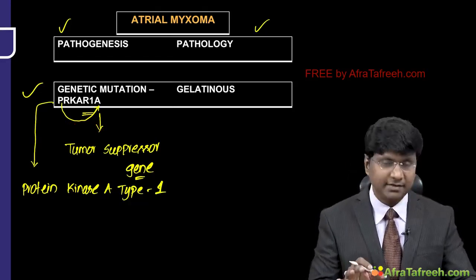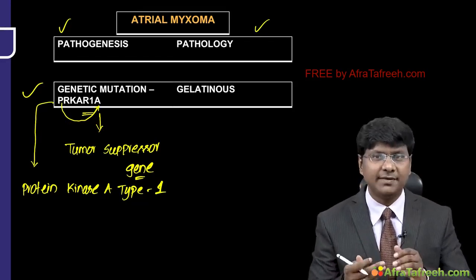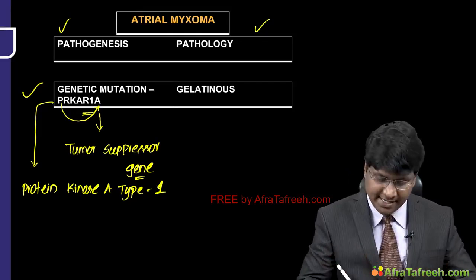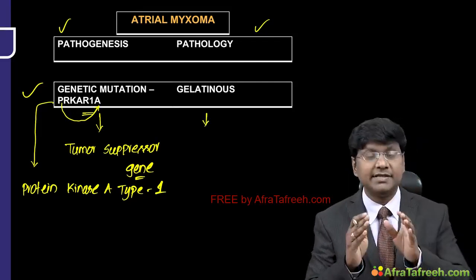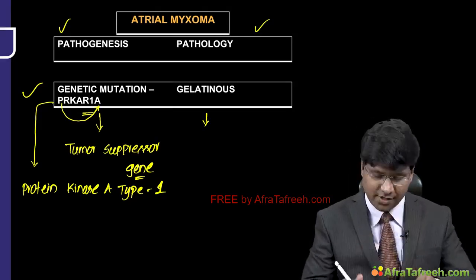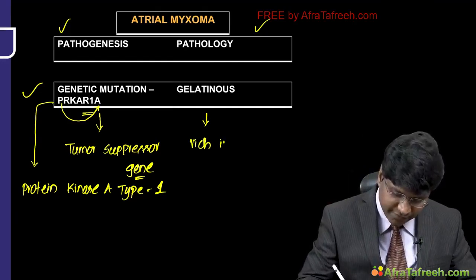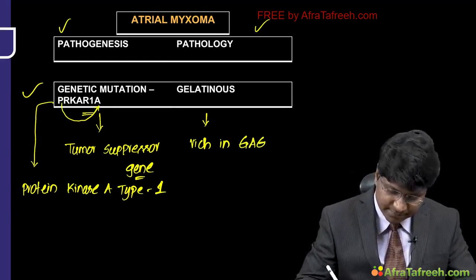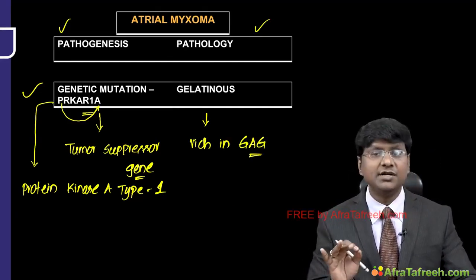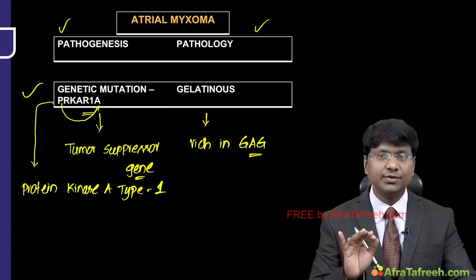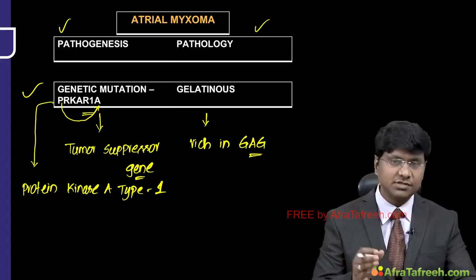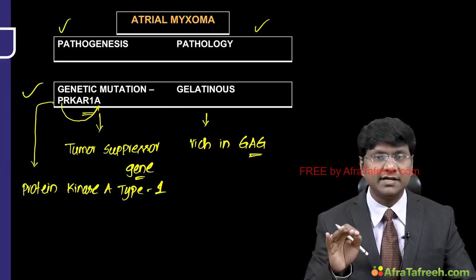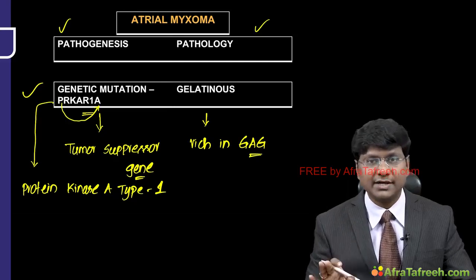Regarding the pathology of atrial myxomas: these are gelatinous structures consisting of a stroma rich in glycosaminoglycans. Pathogenesis is mainly due to genetic mutation. The pathology consists of gelatinous structures containing stroma rich in glycosaminoglycans.